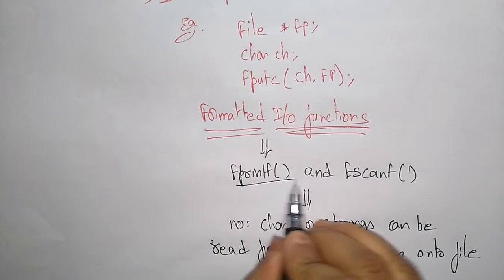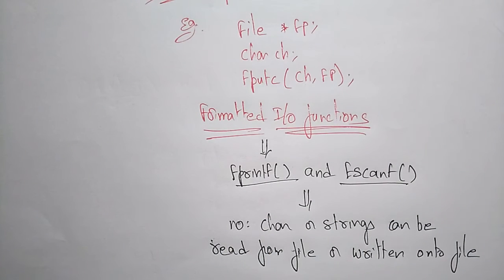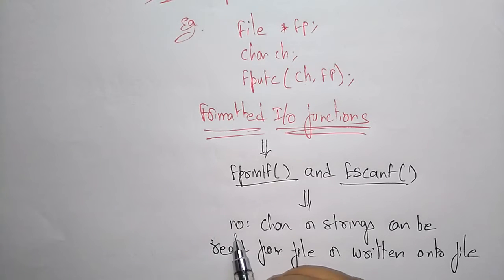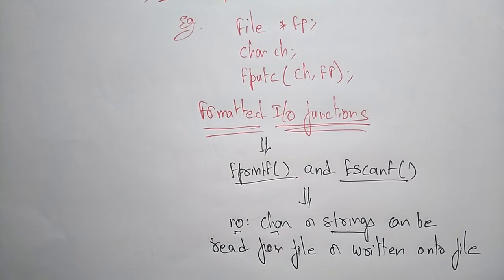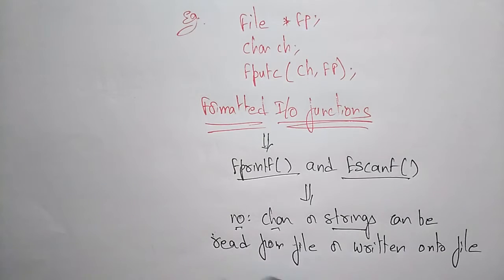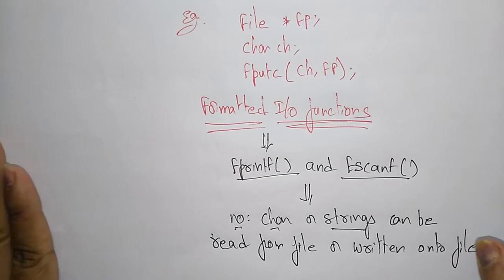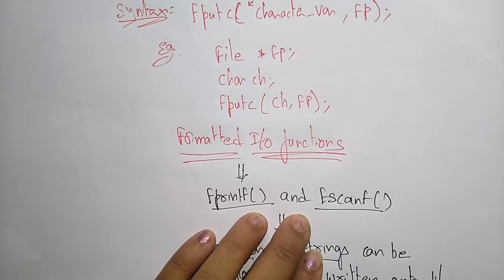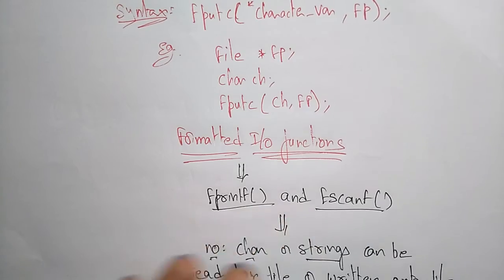By using fprintf and fscanf we can write onto a file or read from a file. The items we can handle include numbers, characters, or strings — whatever is required according to our format. These are the two formatted I/O functions that are used.